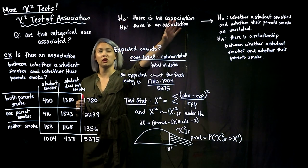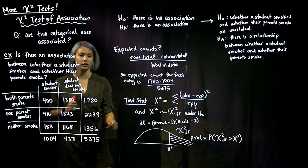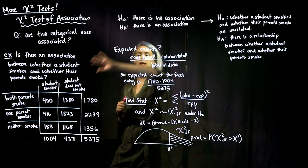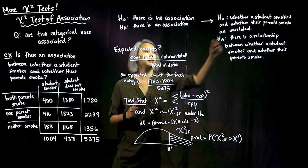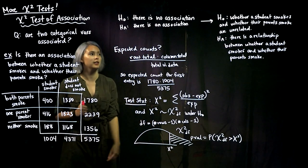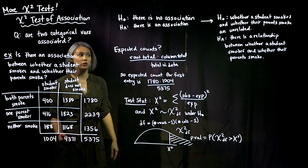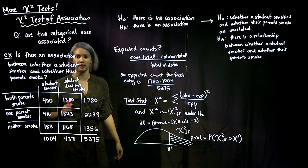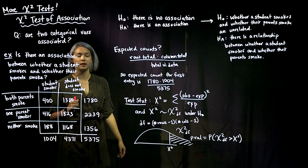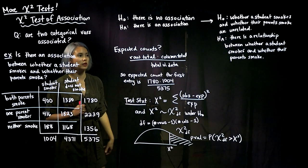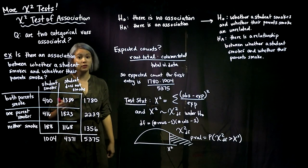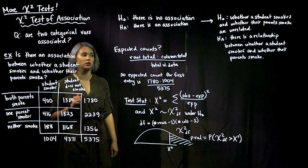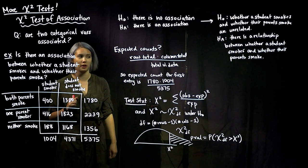This is the general way you'll frame your null and alternative hypotheses. In this example: the null is that whether a student smokes and whether their parents smoke are unrelated, and the alternative is that there is a relationship between whether a student smokes and whether their parents smoke.